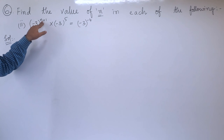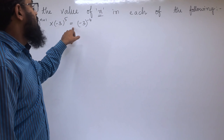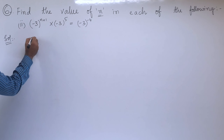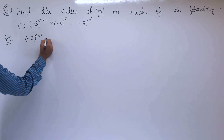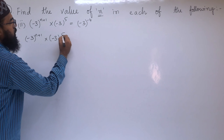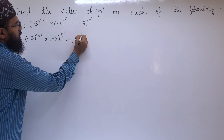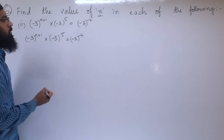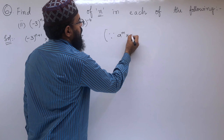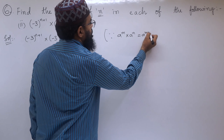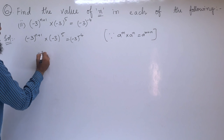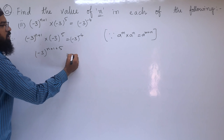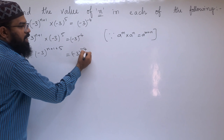Second part: (-3)^(n+1) × (-3)⁵ = (-3)^(-4). In the solution, we have (-3)^(n+1) × (-3)⁵ = (-3)^(-4). When the bases are same, powers should be added, so we apply a^m × a^n = a^(m+n). We get (-3)^(n+1+5) = (-3)^(-4).